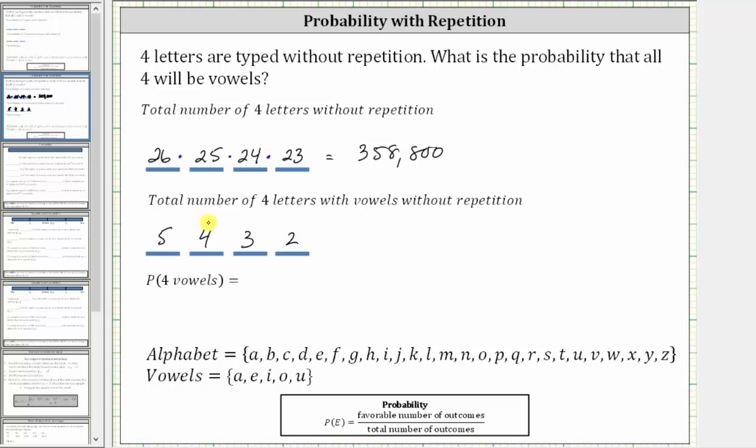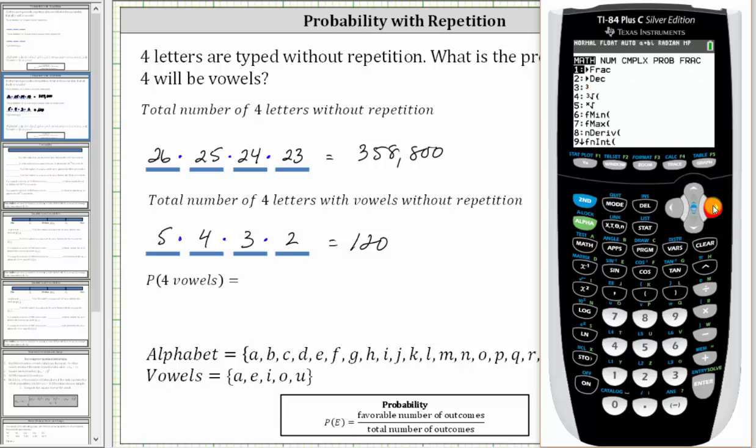The number of ways of typing four letters that are vowels without repetition is 5 × 4 × 3 × 2, which equals 120. We can also think of this as 5 permute 4, which also gives us 120.